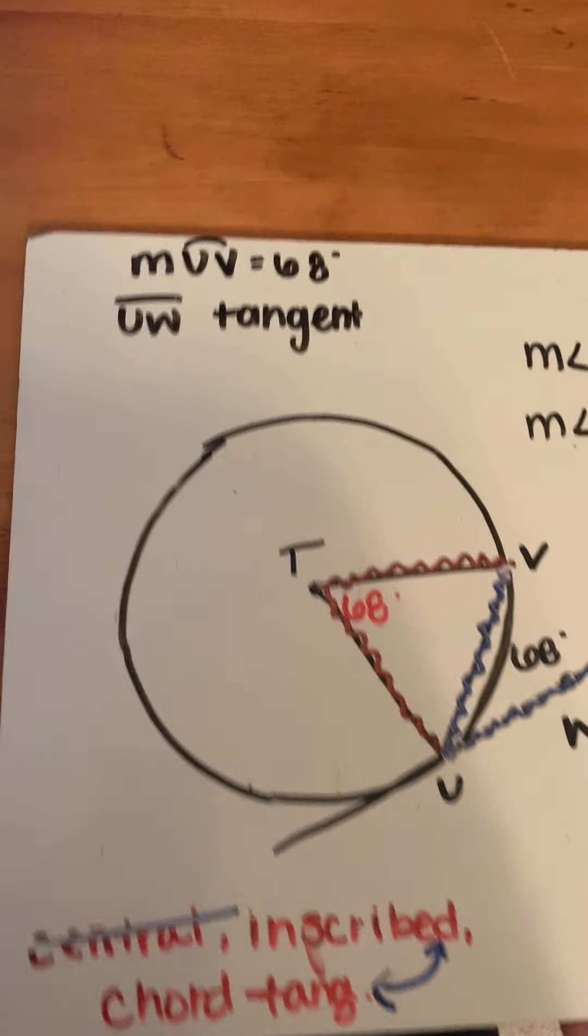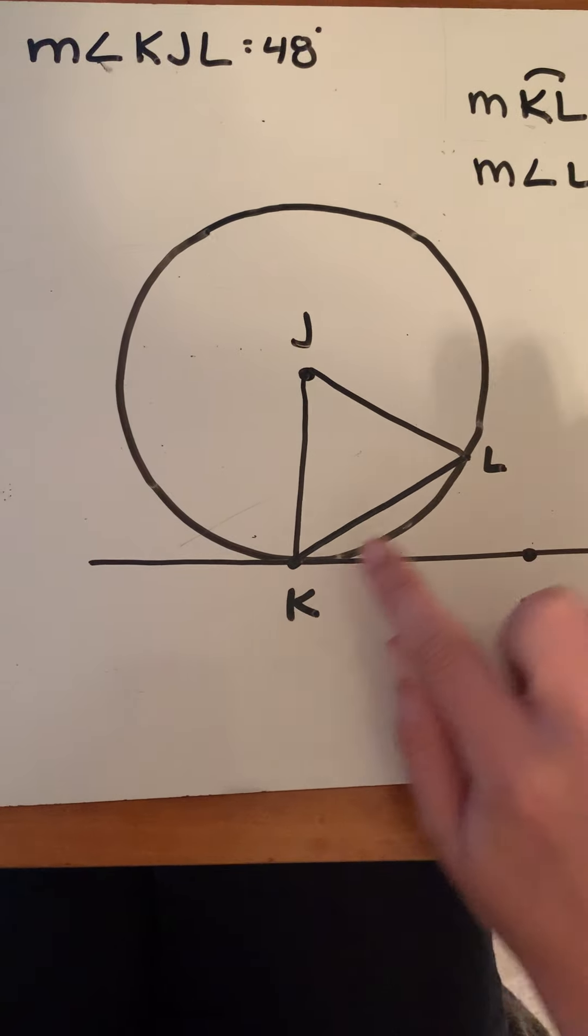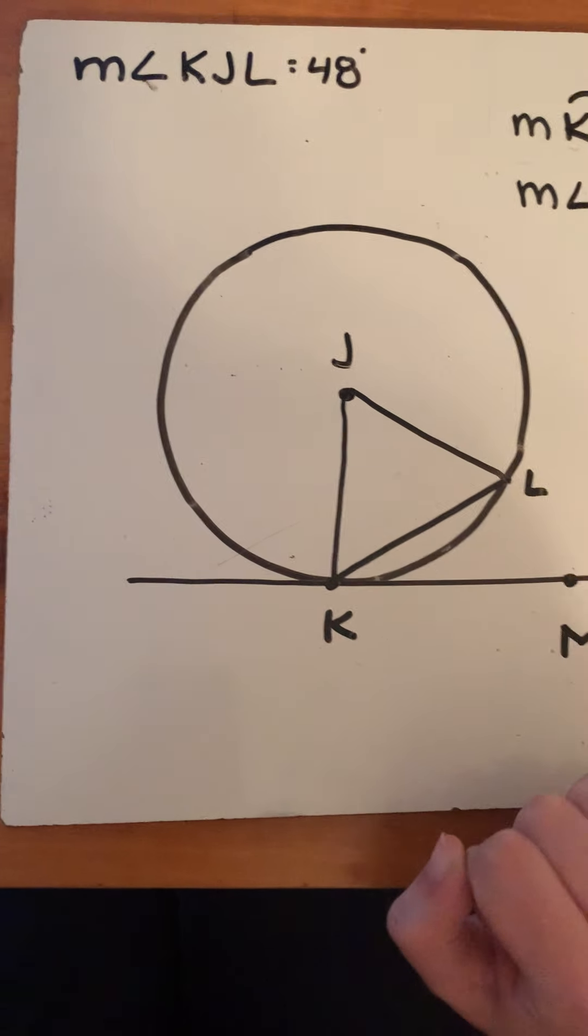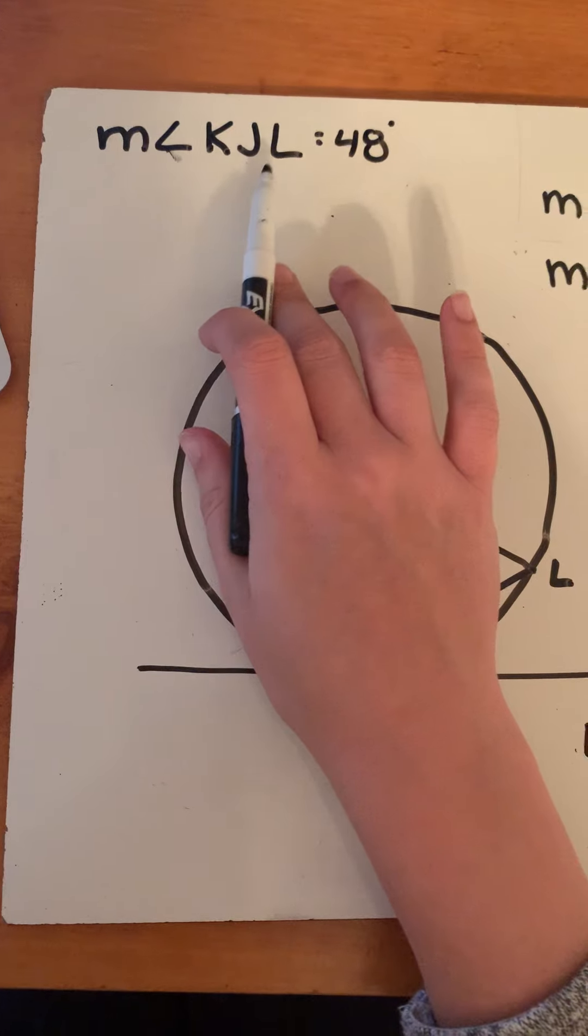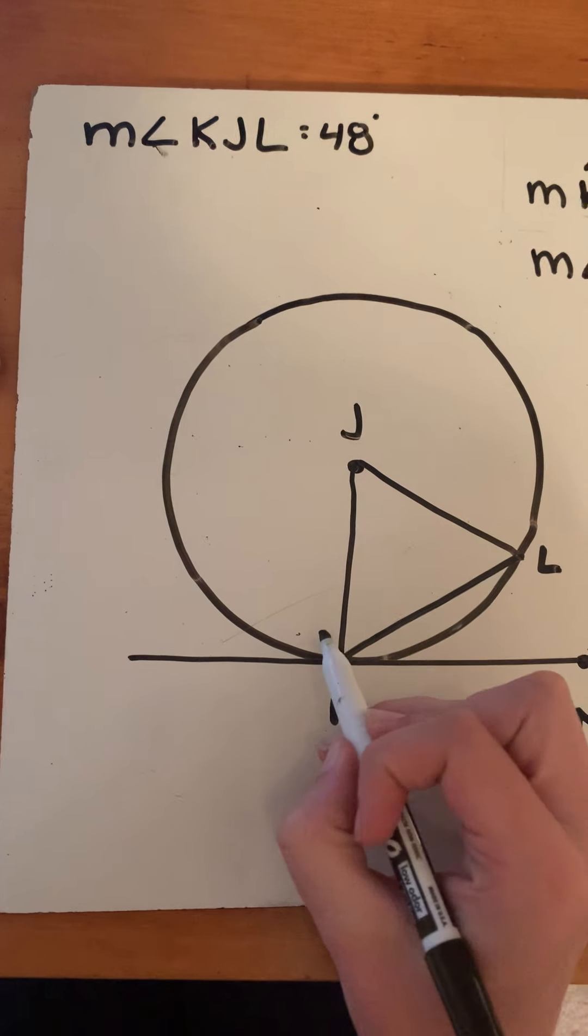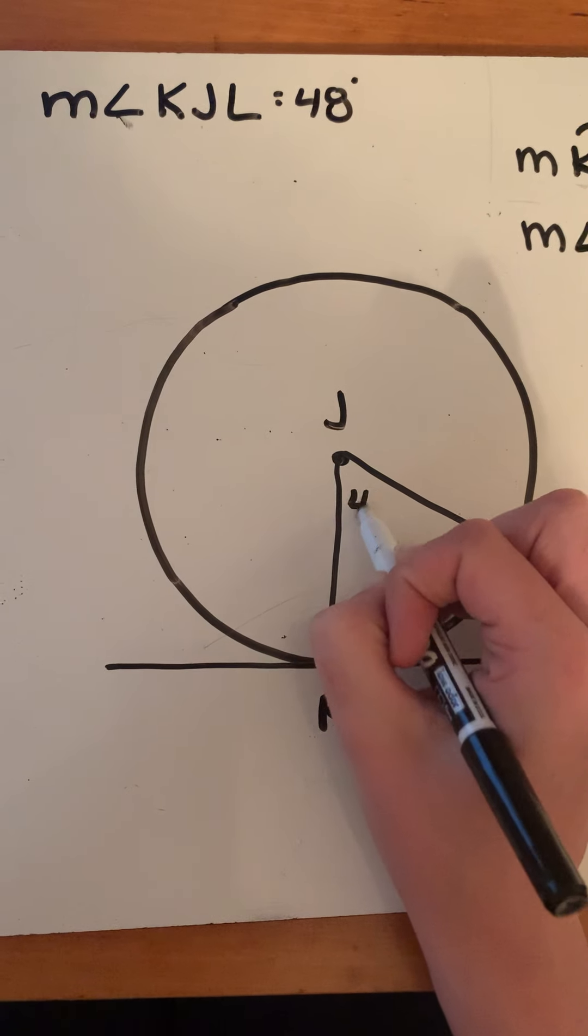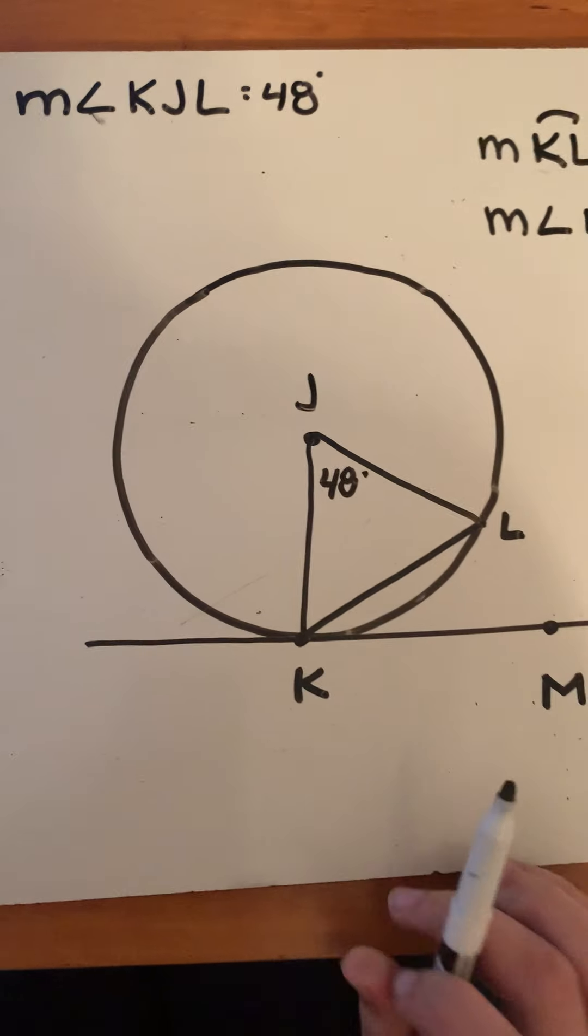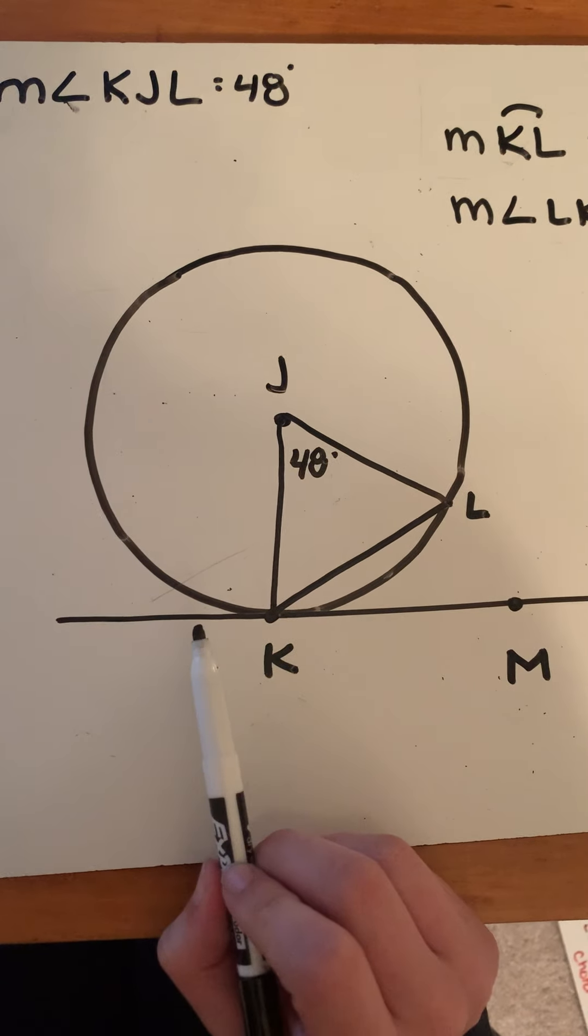Let's do another problem. Up here, same thing. We've got a tangent line, a chord KL, and two radii. The information they give us is the measurement of angle KJL is 48 degrees. So this angle is 48 degrees. I would classify this as a central angle, because it's at the center of the circle.